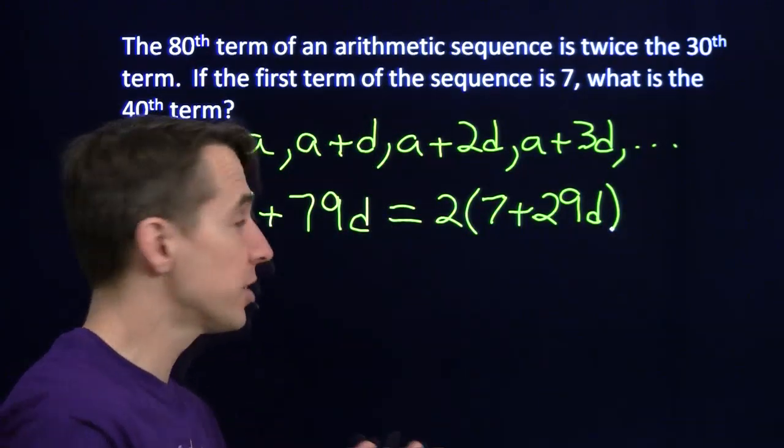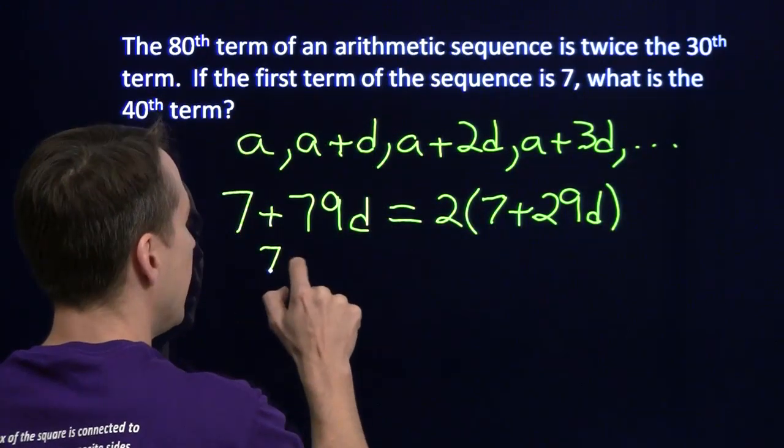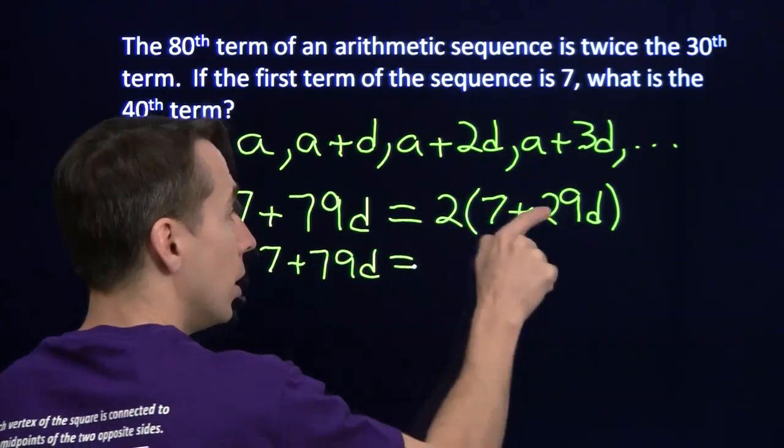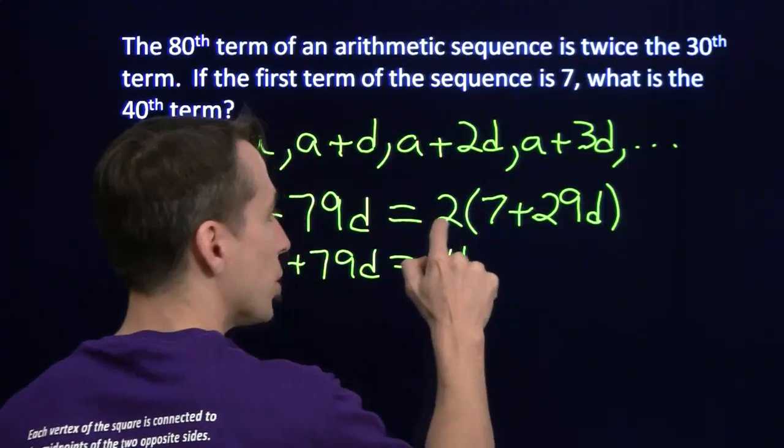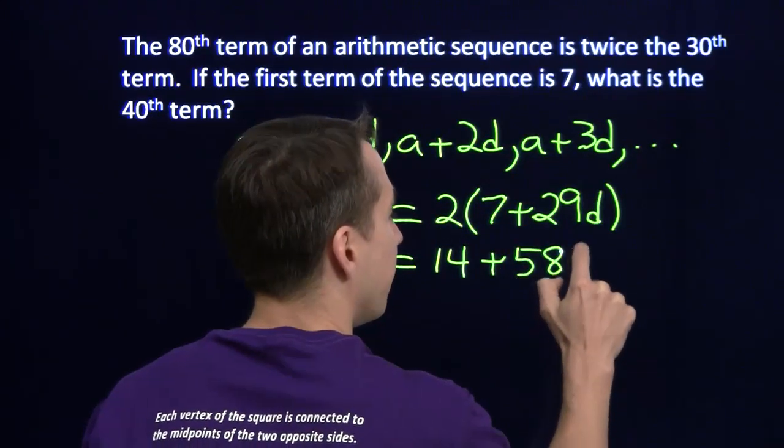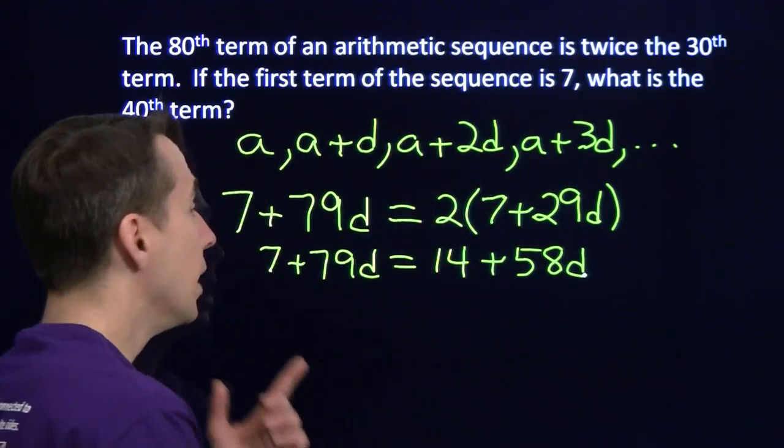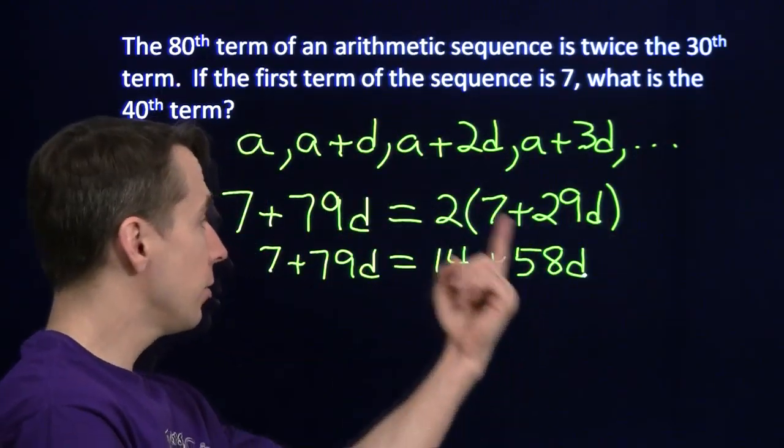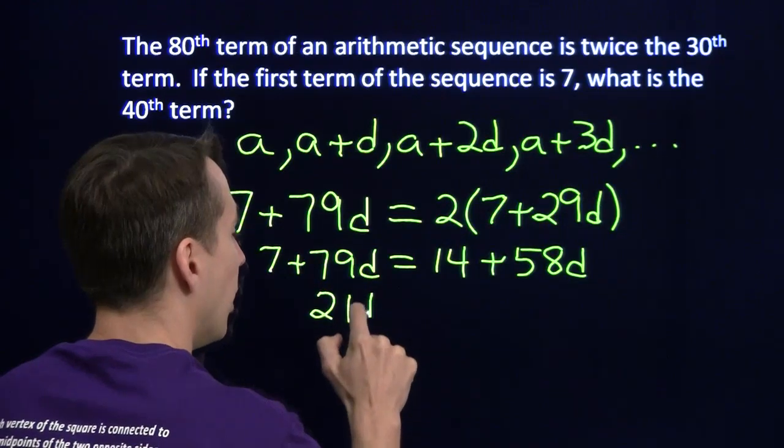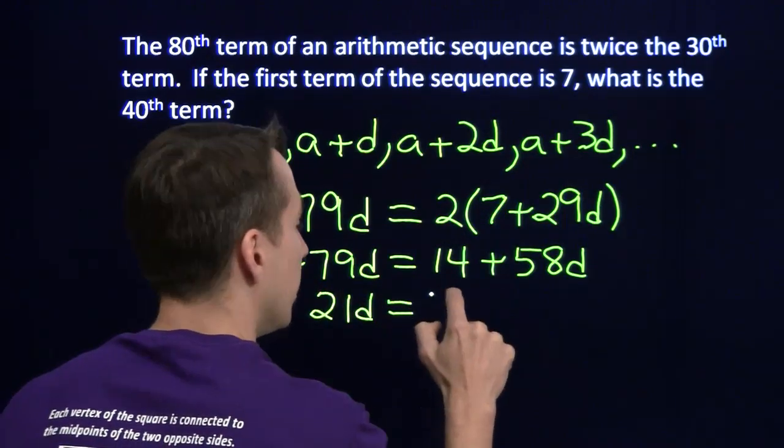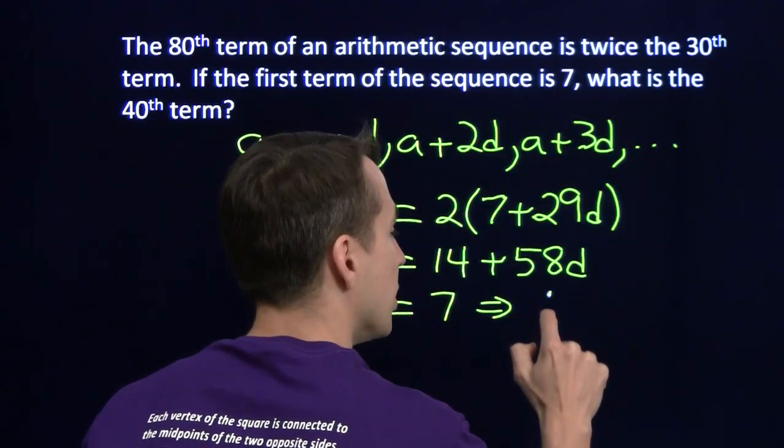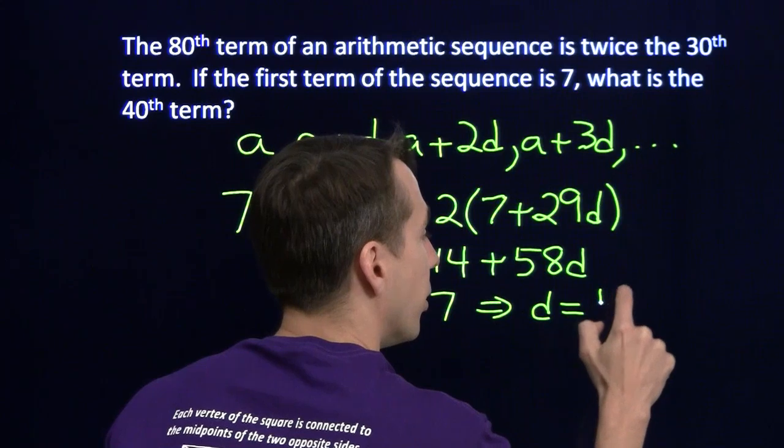This is the algebra problem we know how to solve. We expand the right-hand side. Over here, we still have 7 plus 79D. And over here, we have 2 times 7 is 14. 2 times 29 is 58. 58D. So now we'll subtract 58D from both sides and subtract 7 from both sides. And we'll have 21D equals 7. Divide both sides by 21, and D is 7 over 21, which is 1 third.